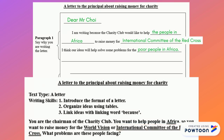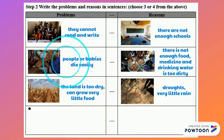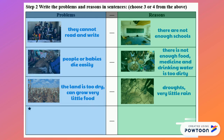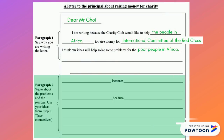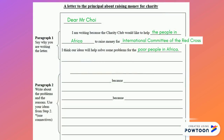Looking back at the problems and reasons I spoke about, we will be taking the information from the previous video lesson where we discussed the reasons and problems, and putting them into paragraph two. So I can write: people in Africa cannot read or write. Why? Because there are not enough schools.